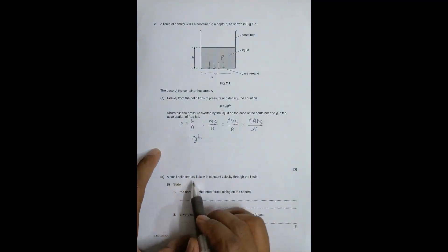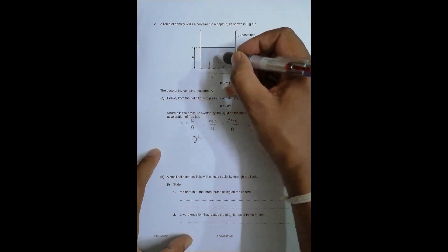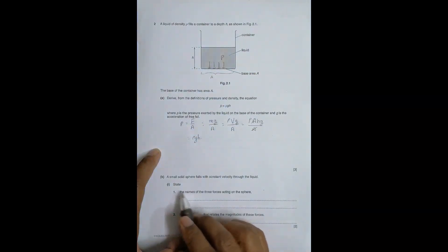A small solid sphere falls with constant velocity through the liquid. We need to name the three forces acting on the sphere. First is the force of gravity, also called the weight. Second is the upthrust force F_up, acting upward. Third is the viscous force, also called the drag force or liquid resistance, F_D.